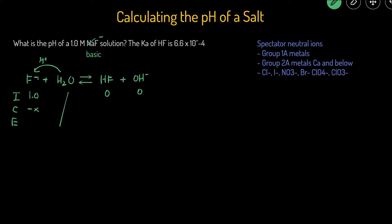C stands for change. F's C line will be minus X, and the HF and OH, they're both going to be plus X. And then E is just the sum of the I and C lines. This will be 1.0 minus X, 0 plus X is X, and 0 plus X is X.